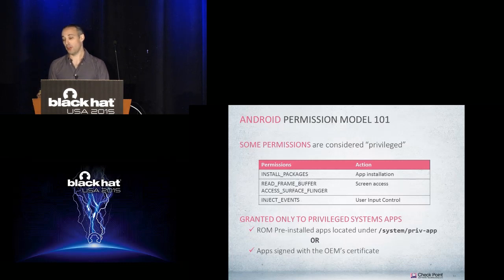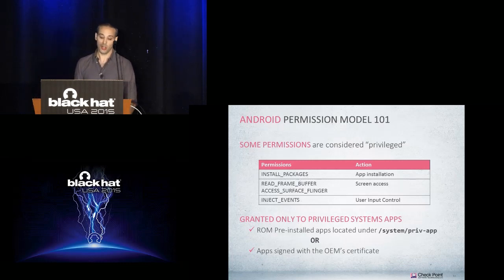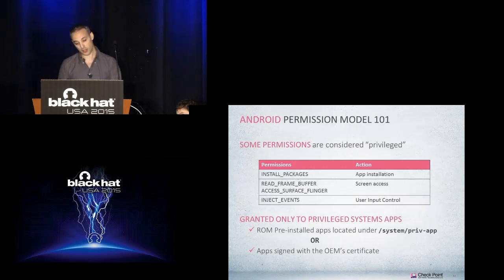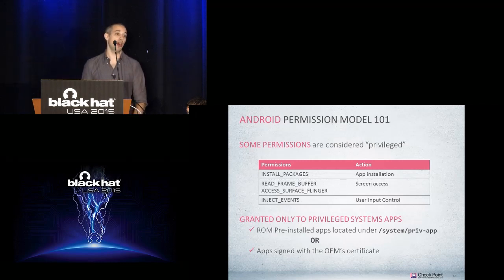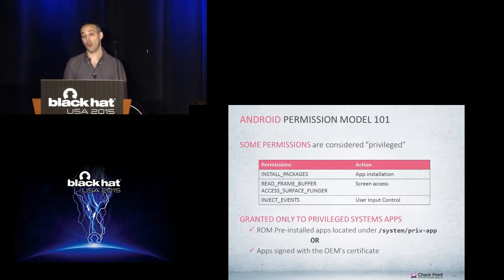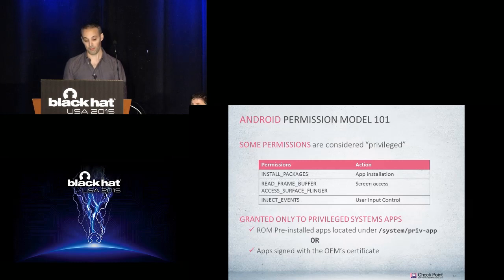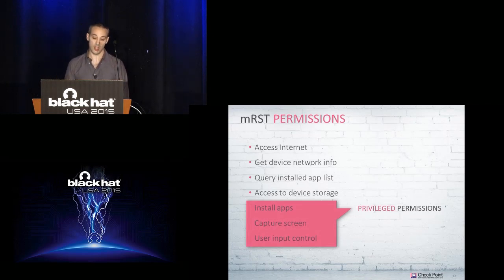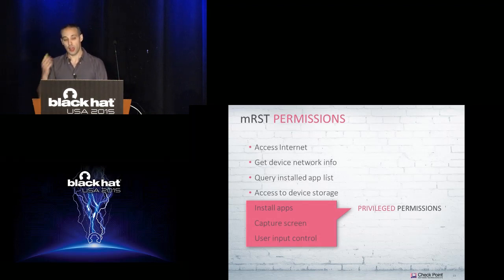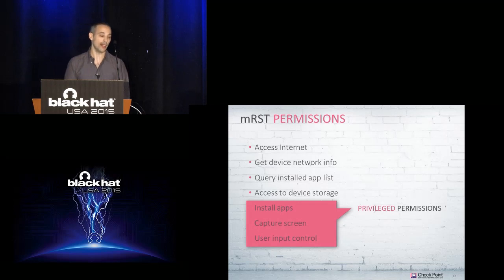Besides regular permissions, there is another set called privileged permissions that usually only system applications can obtain. Examples include the ability to install other applications without any indication to the user, the ability to read your screen, and the ability to simulate user inputs. Because these are privileged permissions, only an app signed by the OEM certificate or pre-installed on the device in the system folder is able to obtain them. When you look at an MRST tool, you will see that they need exactly these privileged permissions — the ability to install applications, read the screen, and simulate user inputs.